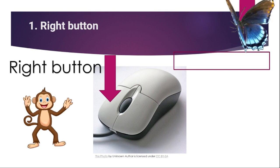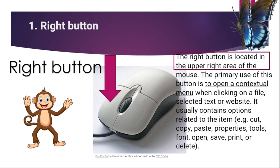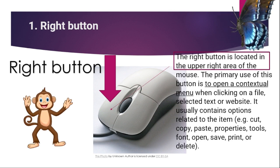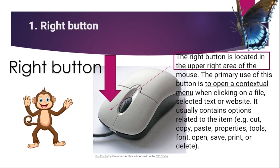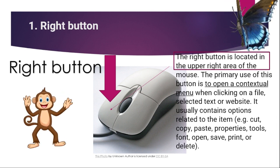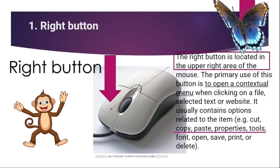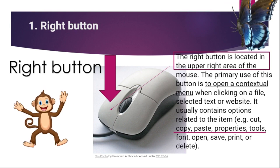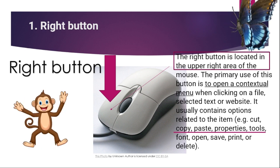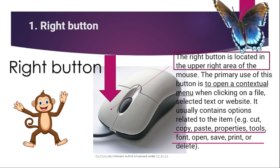So, right button. Ano nga ba ang right button? Right button is located in the upper right area of the mouse. The primary use of this button is to open a contextual menu when clicking on a file, select the text or website. It usually contains options related to the item — example: cut, copy paste, properties, tools, font, open, save, print, or delete.